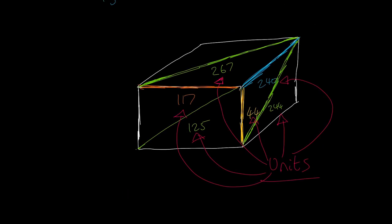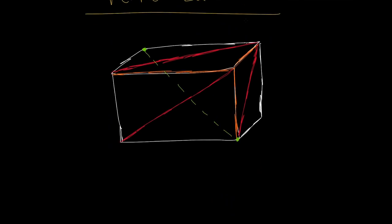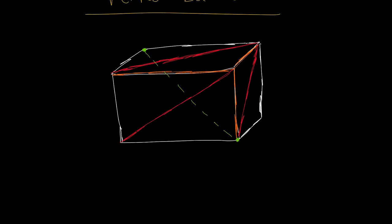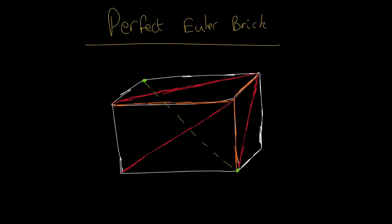So this invisible diagonal that would be going through the shape is also a whole number. And as we or you might be thinking, as I did with this Euler brick, I will now be giving you an example. And no, I won't be, because a perfect Euler brick has never been discovered, not at all. Even with the power of computers, mathematicians have worked out using computing power that if, and this is a big if, if a perfect Euler brick exists, then at least one of its sides...